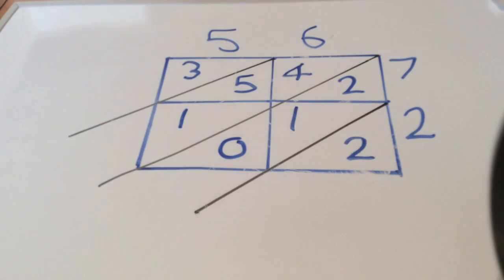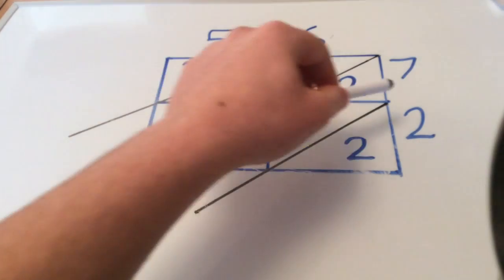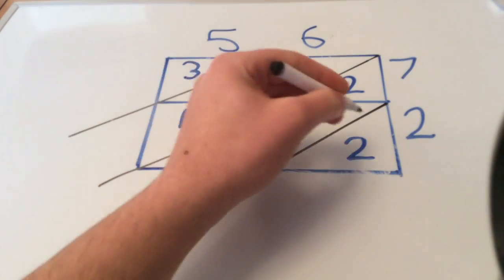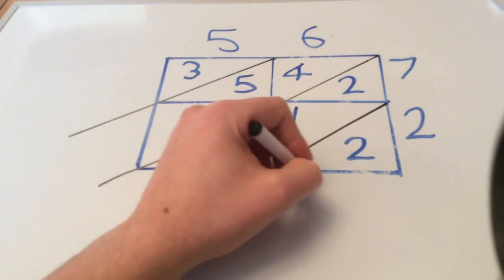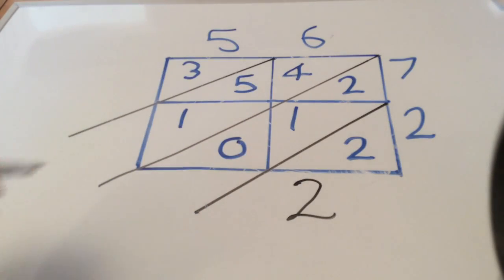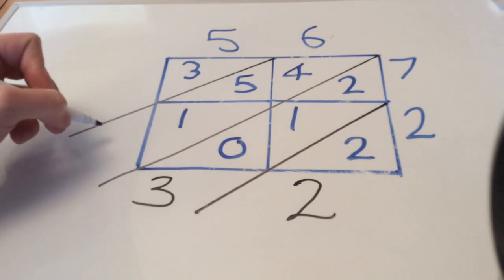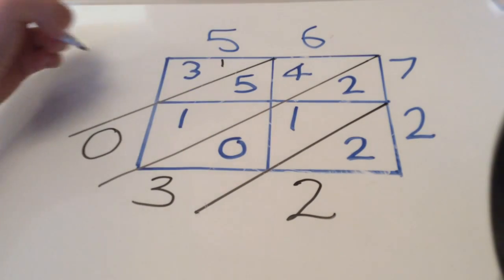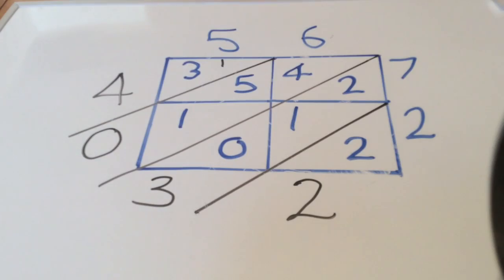Now we haven't got an answer just yet because we need to follow these lines and add up the numbers. So two, there's nothing to add, so we have two. Two add one and zero is three. Four add five is nine, add the one is ten. We can't write ten here, so the zero from the units of ten and we carry over the one. Three add one is four.